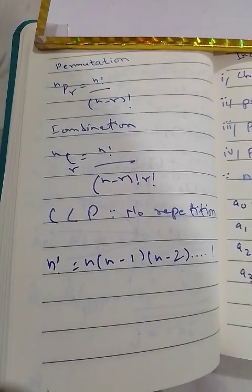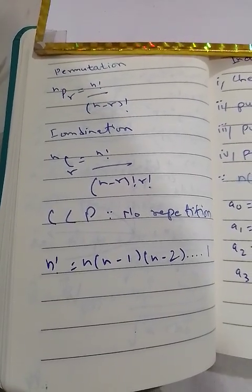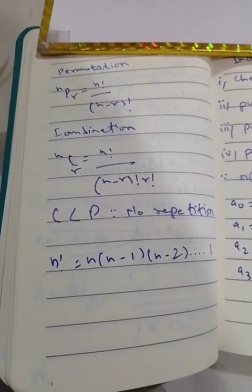n factorial is basically n times n minus 1 times n minus 2, up to 1.